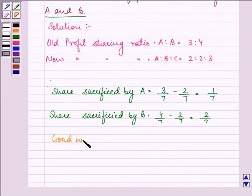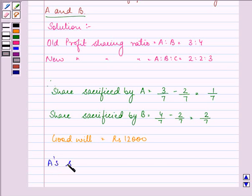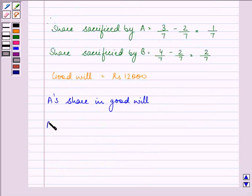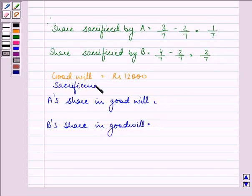The amount of goodwill is given to us as Rs. 12,000. So now, we can find out A's share in goodwill and B's share in goodwill. Above, we have found out the sacrificing ratio as 1 is to 2.